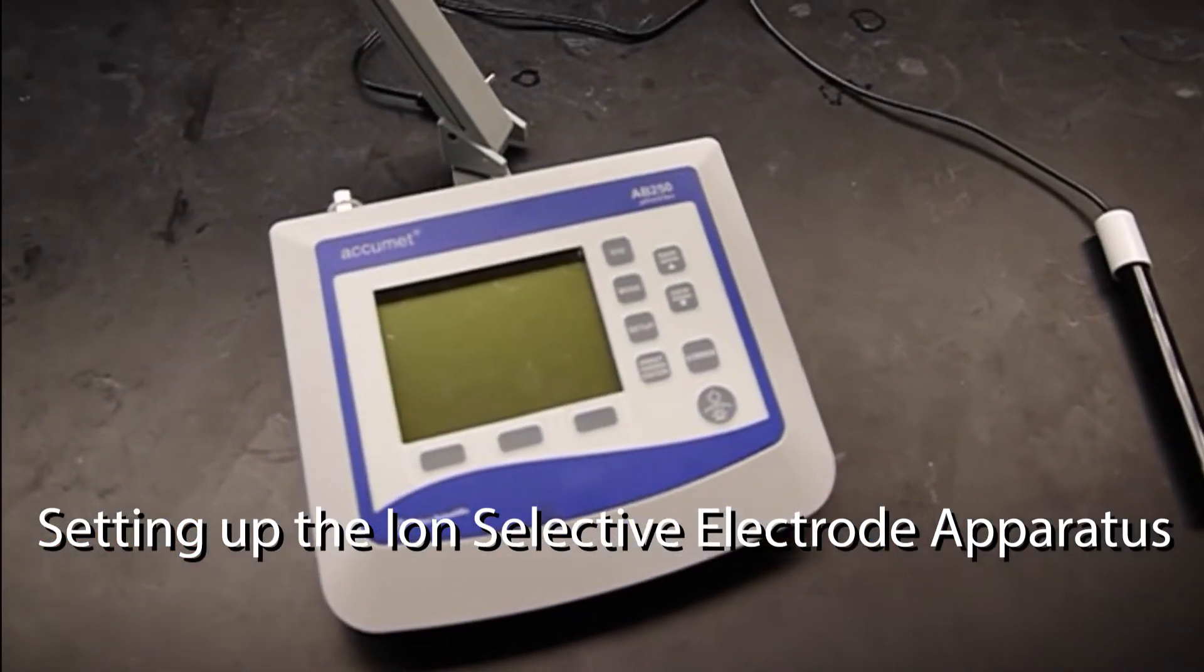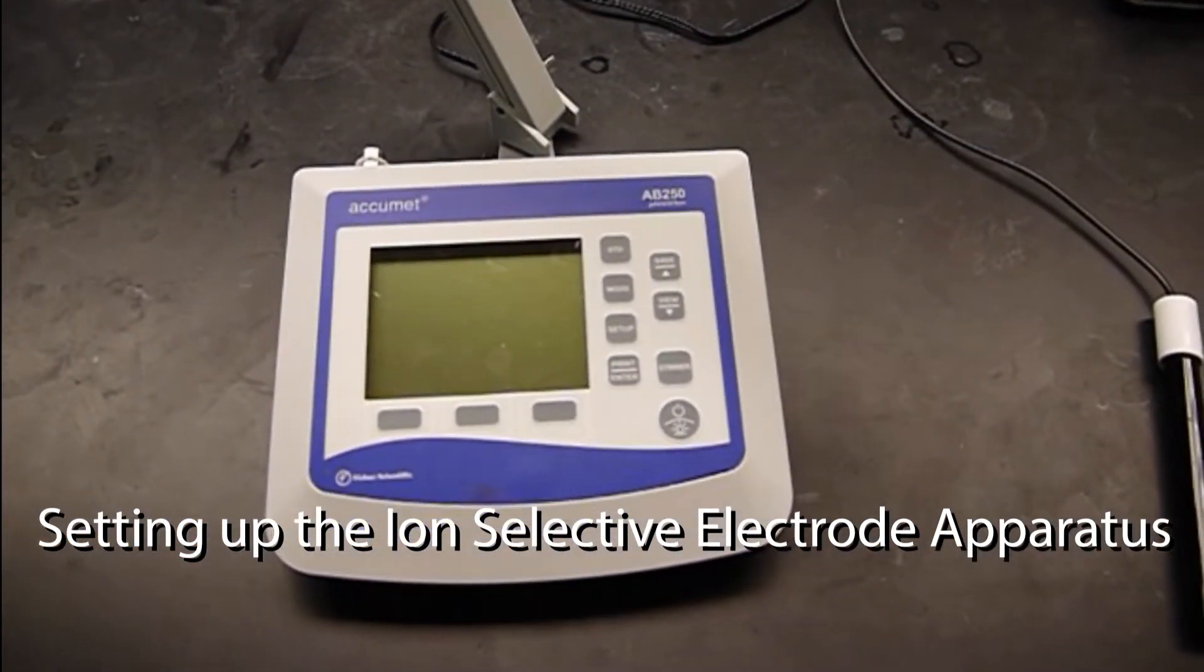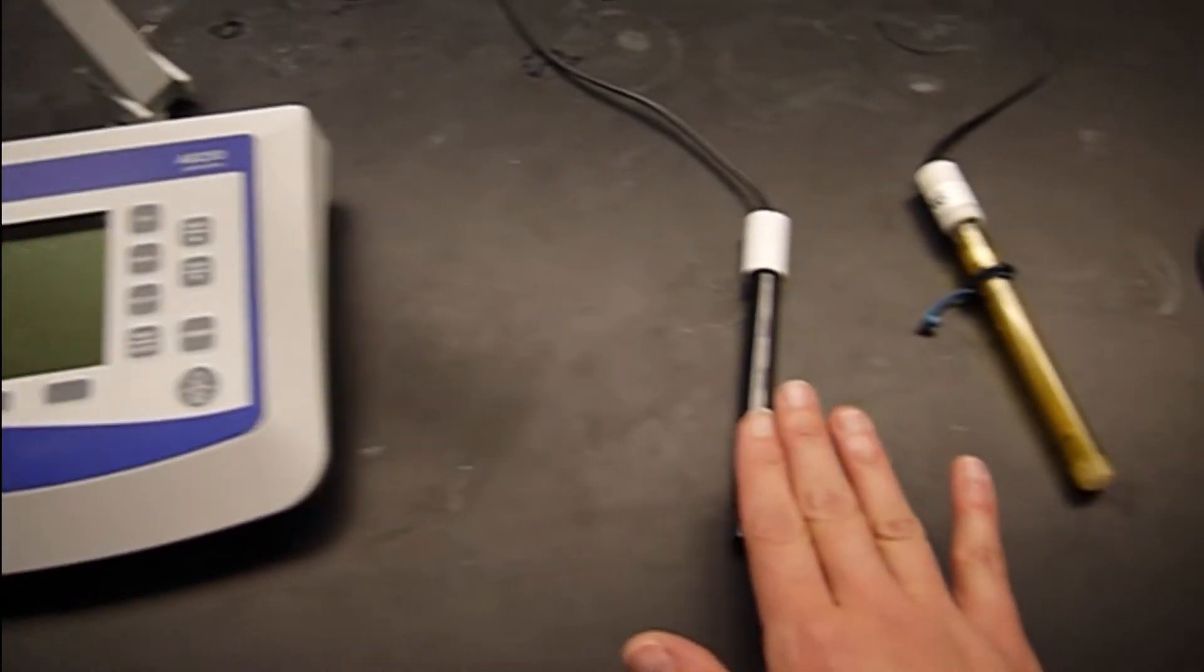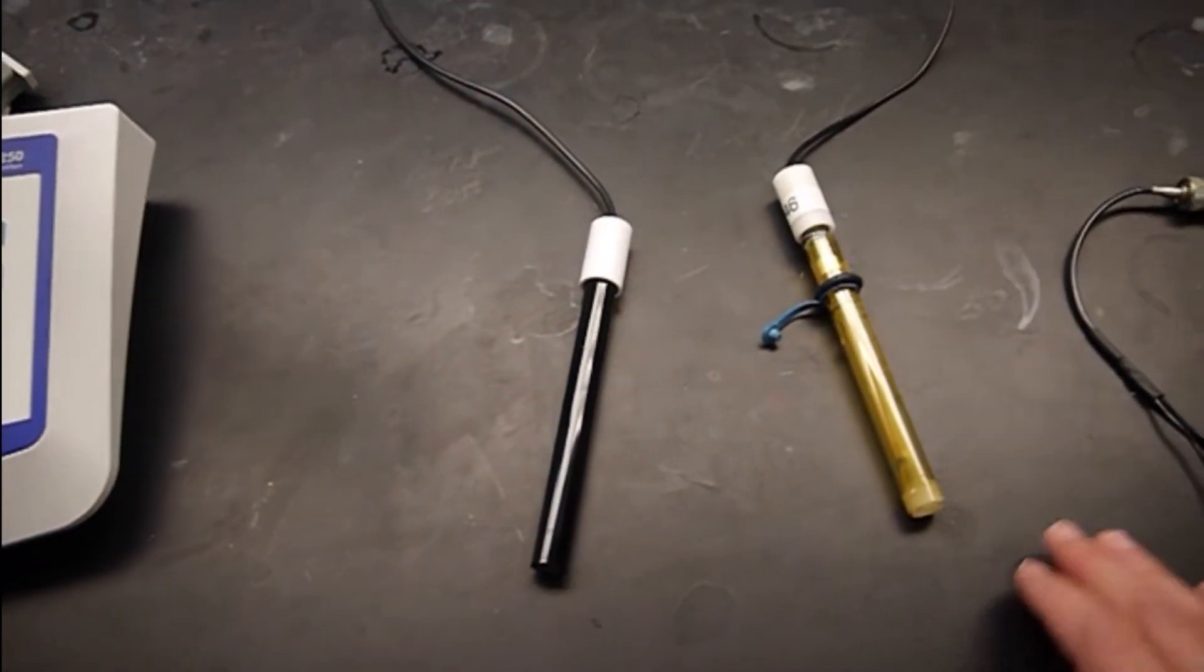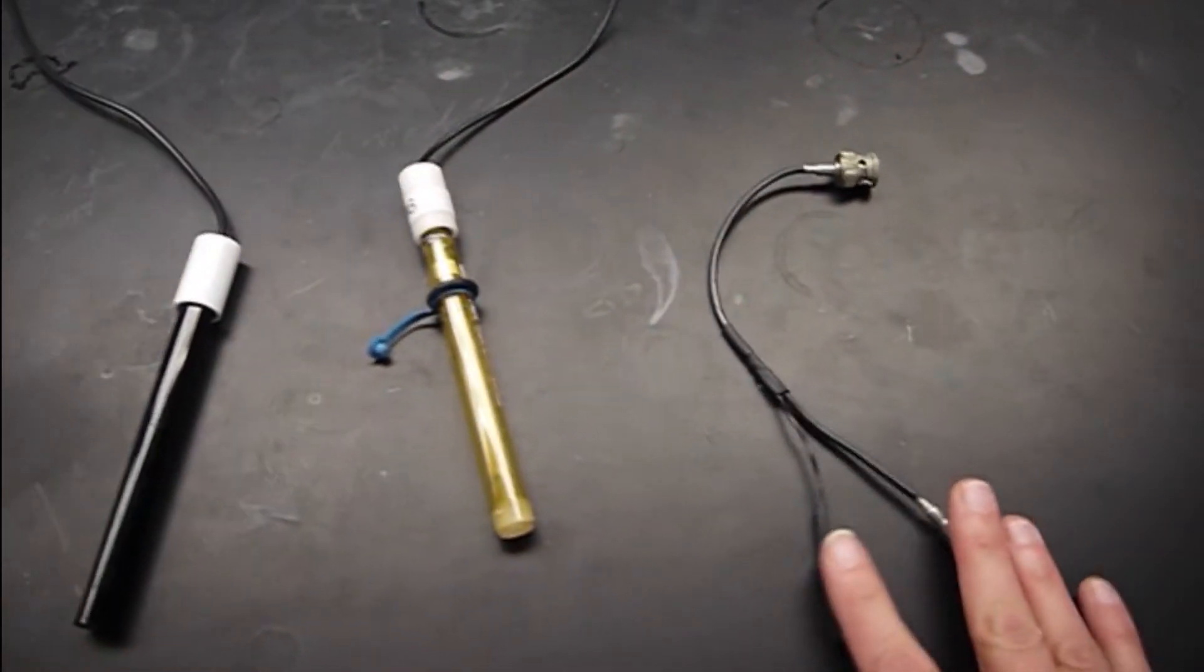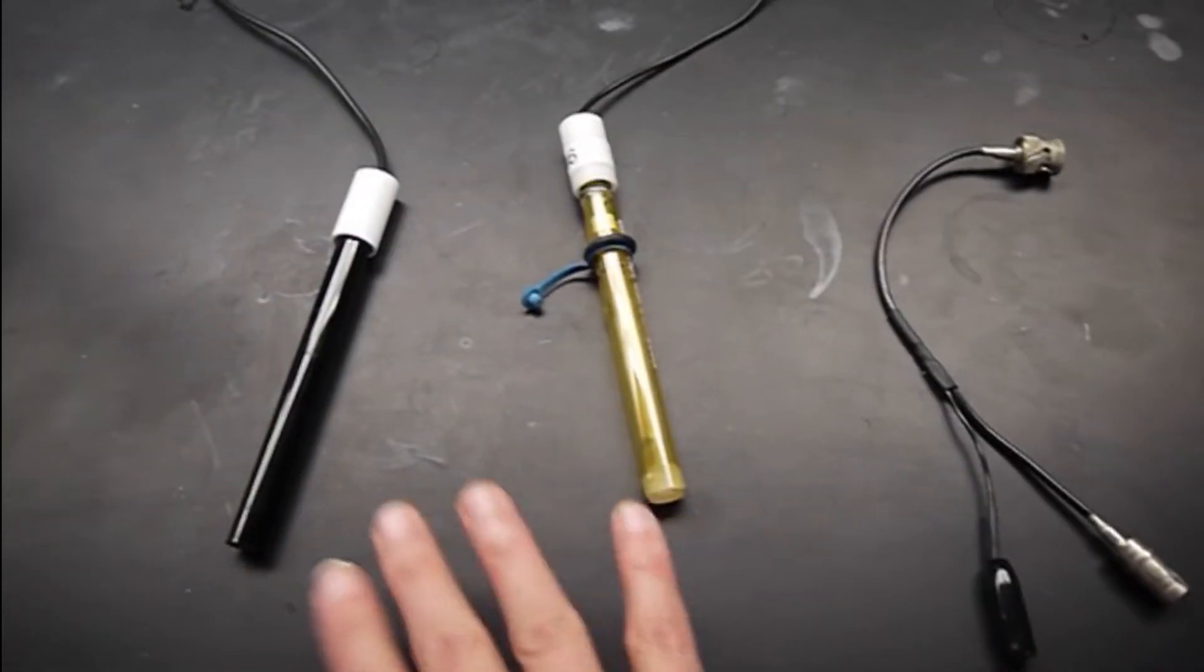Alright, so I've gathered up the meter and supplies for the ion selective electrode lab. We have our meter, selective electrode, the silver silver chloride reference electrode, and the forked adapter that we're going to need to plug these two electrodes into the meter.